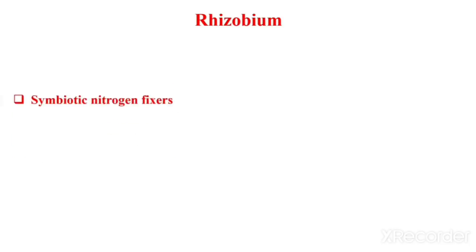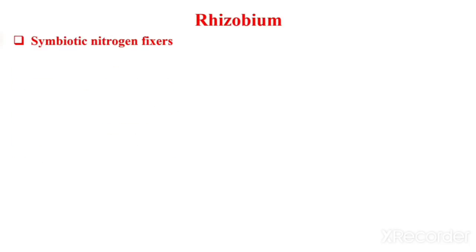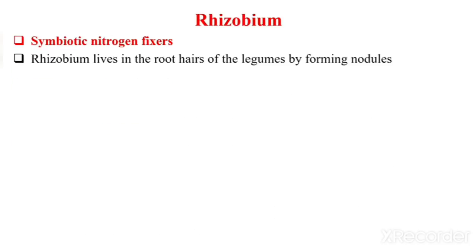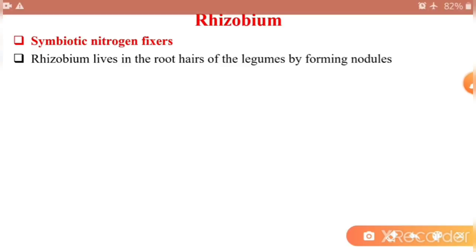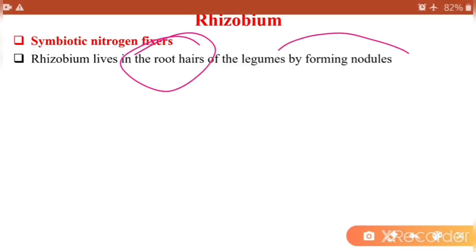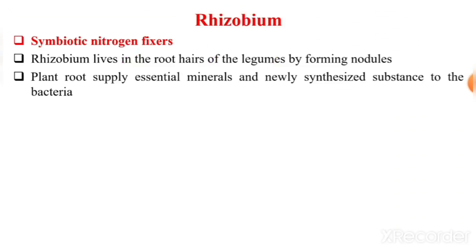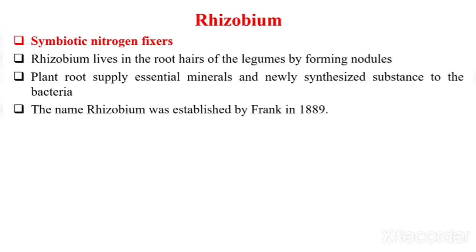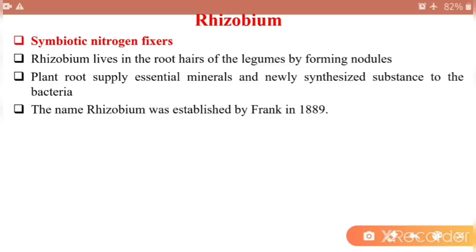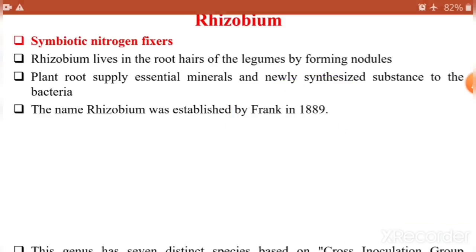The first type is Rhizobium, and it is a symbiotic nitrogen fixer. Rhizobium lives in the root hairs of legumes by forming nodules. Plant roots supply essential minerals and newly synthesized substances to the bacteria. The name Rhizobium was first established by the scientist Frank in 1889.